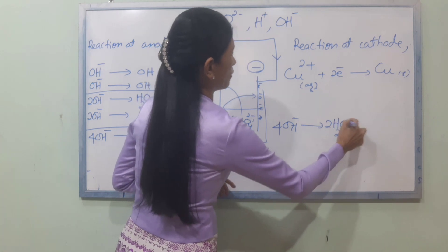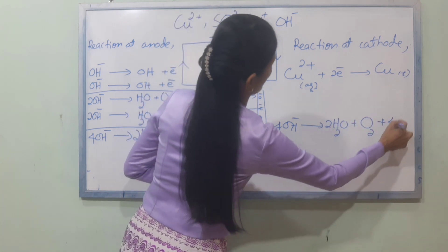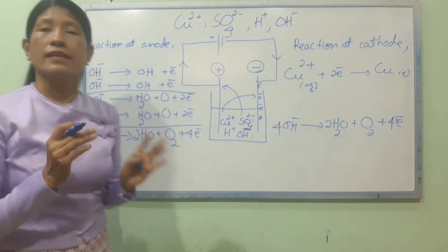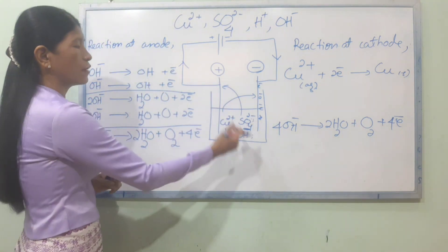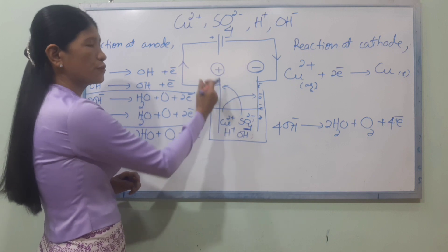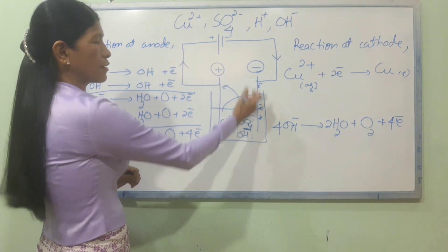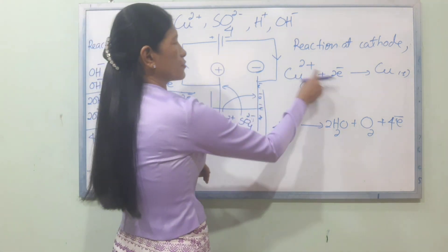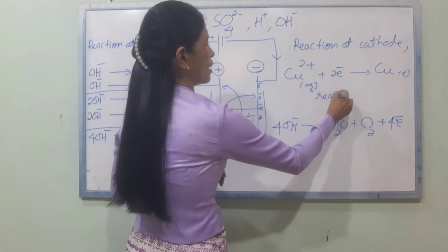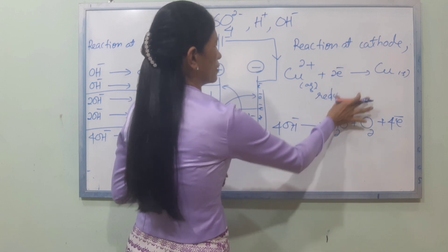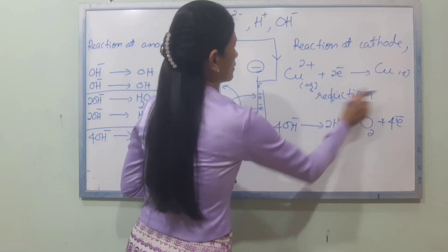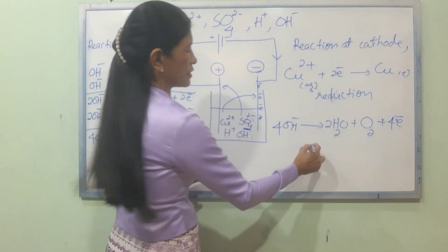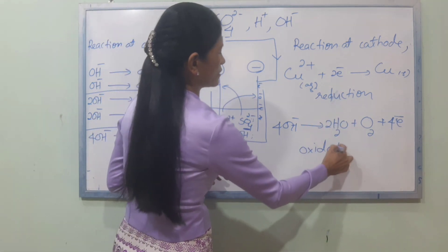The equation for OH- ions is: 4OH- gives 2H2O plus O2 plus electrons. The electrons are accepted in reduction, and electrons are given up in oxidation.